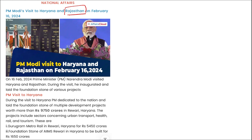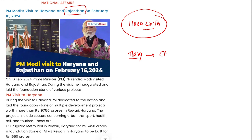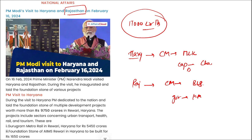PM Modi also visited Rajasthan, where he attended the Viksit Bharat Viksit Rajasthan program and unveiled projects worth ₹17,000 crore, including highway infrastructure, railway infrastructure, power transmission, and the Jal Jeevan Mission. For Haryana: Chief Minister is Manohar Lal Khattar, capital is Chandigarh, Governor is Bandaru Dattatreya. For Rajasthan: Chief Minister is Bhajan Lal Sharma, Governor is Kalraj Mishra, capital is Jaipur.